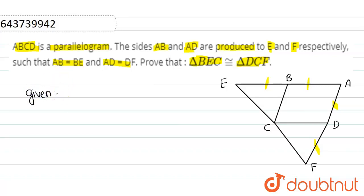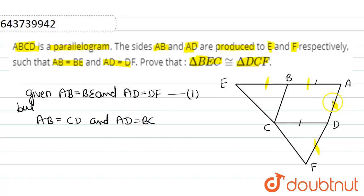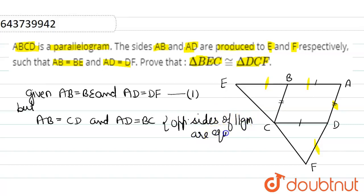Number 1 — given: AB is equal to BE and AD is equal to DF. Also, AB is equal to CD and AD is equal to BC, since opposite sides of a parallelogram are equal. Mark this number 2.